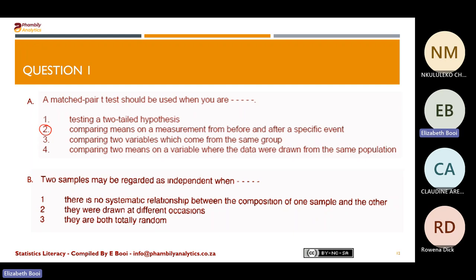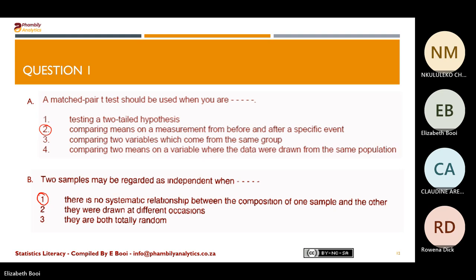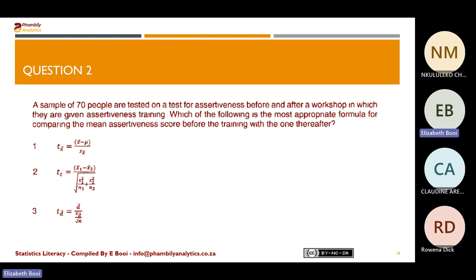Question B: Two samples may be regarded as independent when — think about what we discussed last time. Dependent means there is some relation between the two; independent means there is no relation, one does not affect the other. The answer would be option one — when there is no relationship between the two groups.